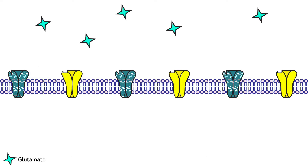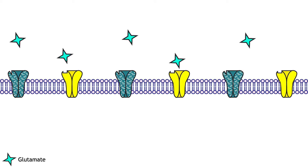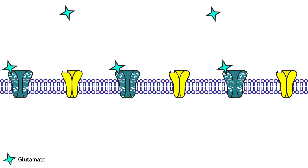The receptors can only be opened by a specific ligand. Neurotransmitters and receptors fit together like a lock and key. Only certain neurotransmitters are able to bind to and open certain receptors. In the animation, glutamate binds to and opens glutamate receptors, but has no effect on GABA receptors.